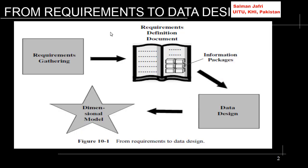In the previous discussion we discussed about how requirements are gathered. So now we can see that after carrying out the first step, which is requirements gathering, we create a requirements definition document, which is a final requirement document. The most important part of this requirement document are the information packages that we discussed in detail. Those information packages are used for converting into a data design, and once a data design has been produced, the final dimensional model can be created.